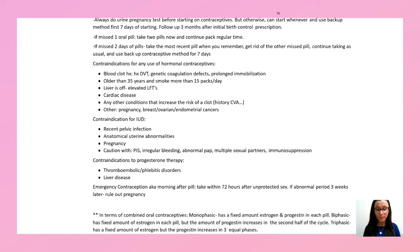Contraindications for IUD include recent pelvic infection, pregnancy, and anatomical uterine abnormality. Use caution with patients who have irregular bleeding, abnormal pap, multiple sexual partners, or are immunosuppressed. Contraindication to progesterone therapy includes liver disease and thromboembolism disorder. Emergency contraceptive (the morning-after pill) should be taken within 72 hours after unprotected sex; always rule out pregnancy.